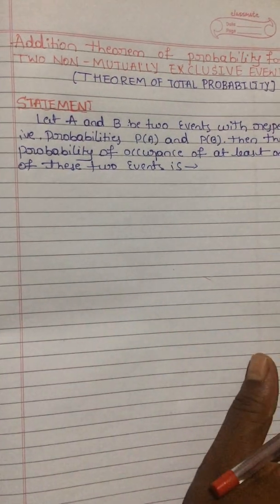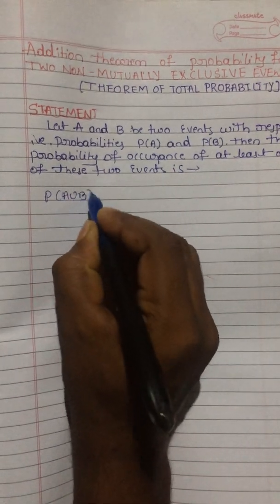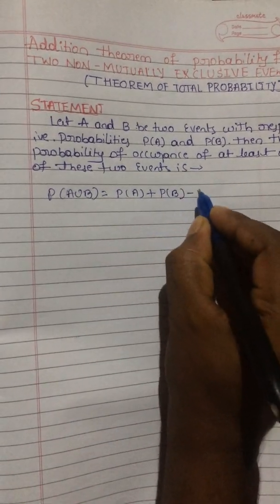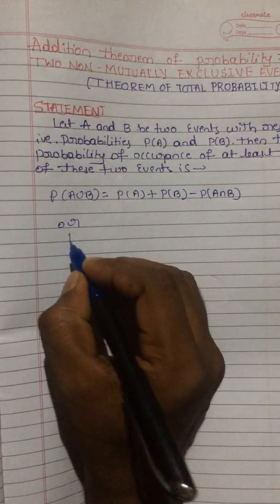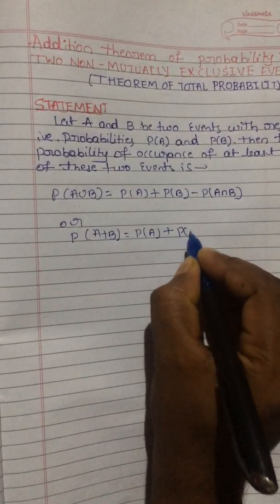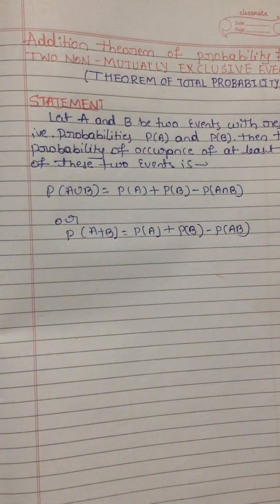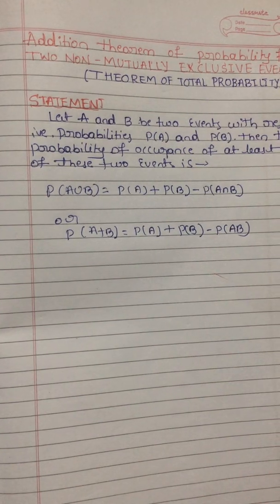For non-mutually exclusive events, we can write: P(A∪B) = P(A) + P(B) - P(A∩B). Or equivalently, P(A+B) = P(A) + P(B) - P(AB). Here, A∪B means that events A and B are combined to take their probability.